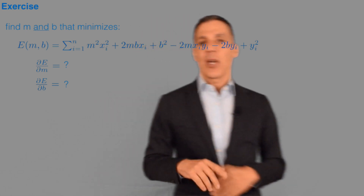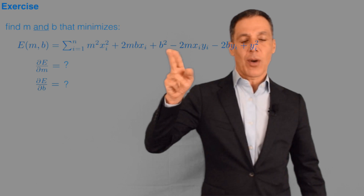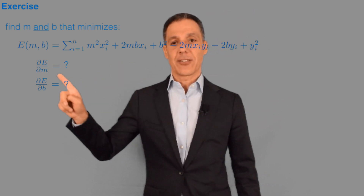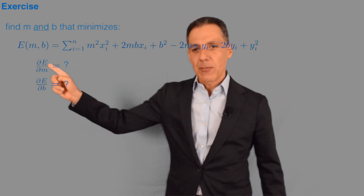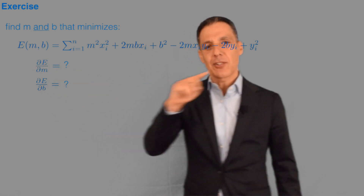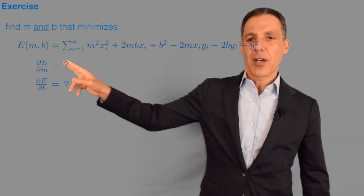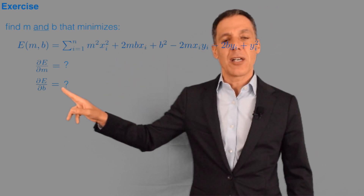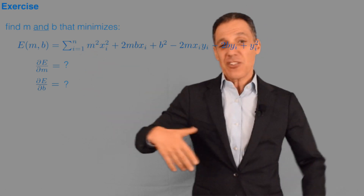Here's an exercise for you: find the m and b that minimizes this quadratic error function. The only thing I'll ask you to do is compute the partial derivatives. Notice that the symbol used here is the delta — not a d — which refers to a partial derivative. When I ask for the partial derivative with respect to m, you treat b as a constant. When I ask for the partial derivative with respect to b, you treat m as a constant. Then you just compute a regular derivative.